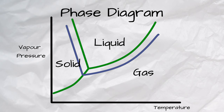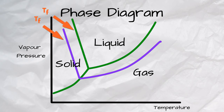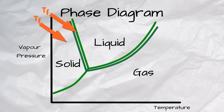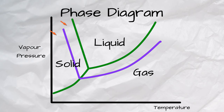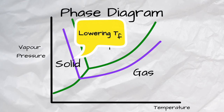Please note that at the freezing point, the vapor pressure of the solid form and the liquid form must be the same. Therefore, lowering the vapor pressure leads to lowering the freezing temperature.